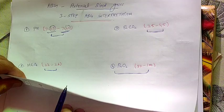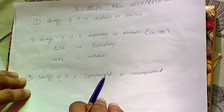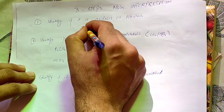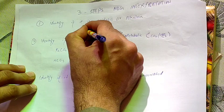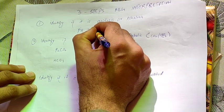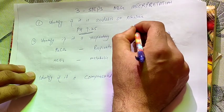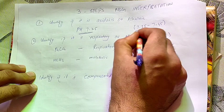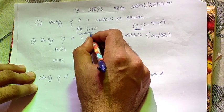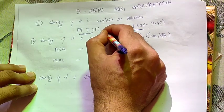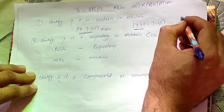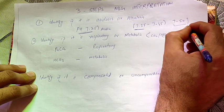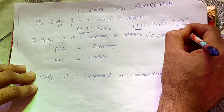Now here is the three-step ABG interpretation formula. Step one: identify if it is acidosis or alkalosis. For example, if pH is 7.25 — our normal value is 7.35 to 7.45 — so 7.25 is on the lower side, meaning it is acidic, so the patient has acidosis. Another example: if pH is 7.50, it's on the basic side, so the blood will be in alkalosis.